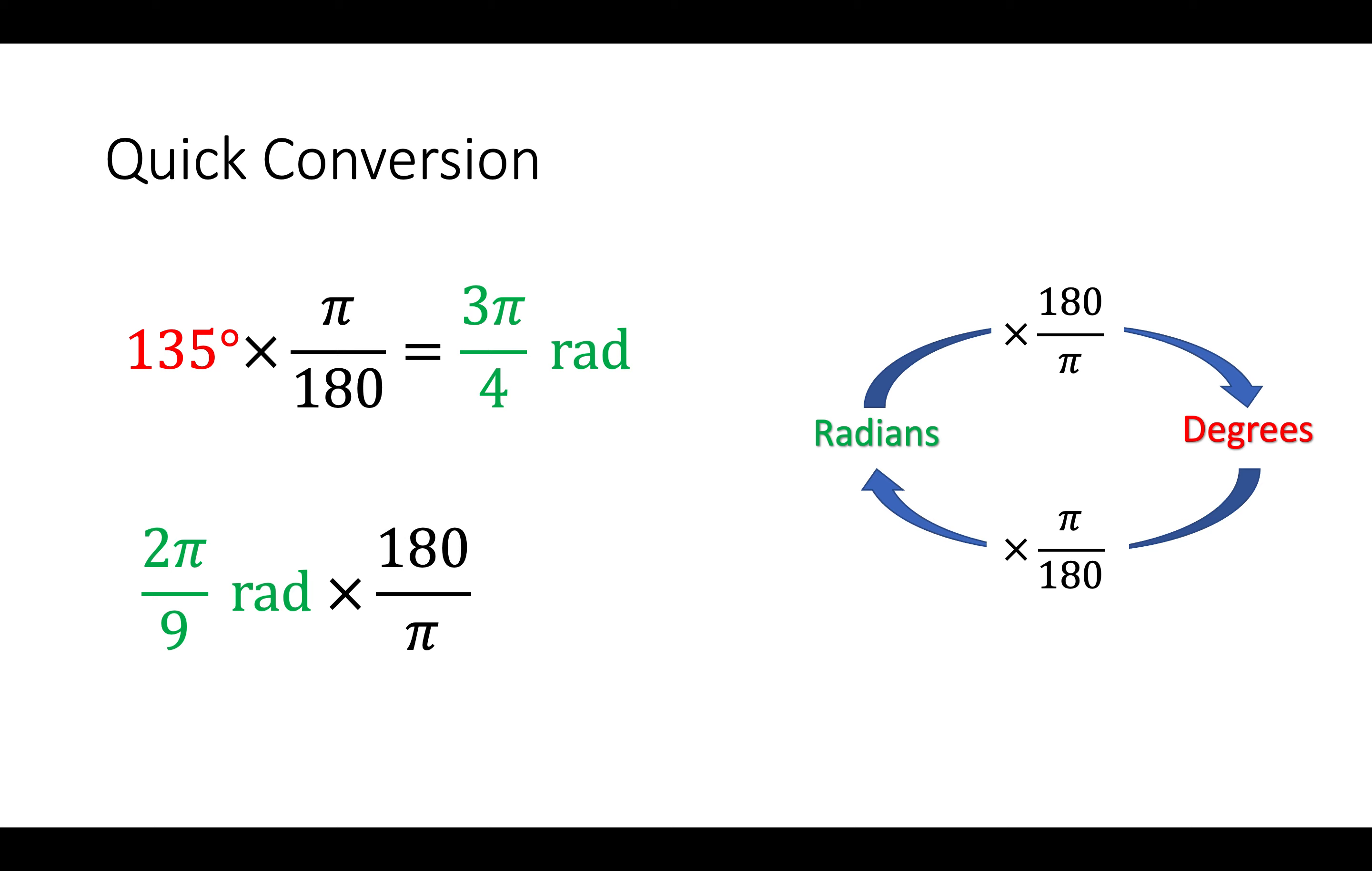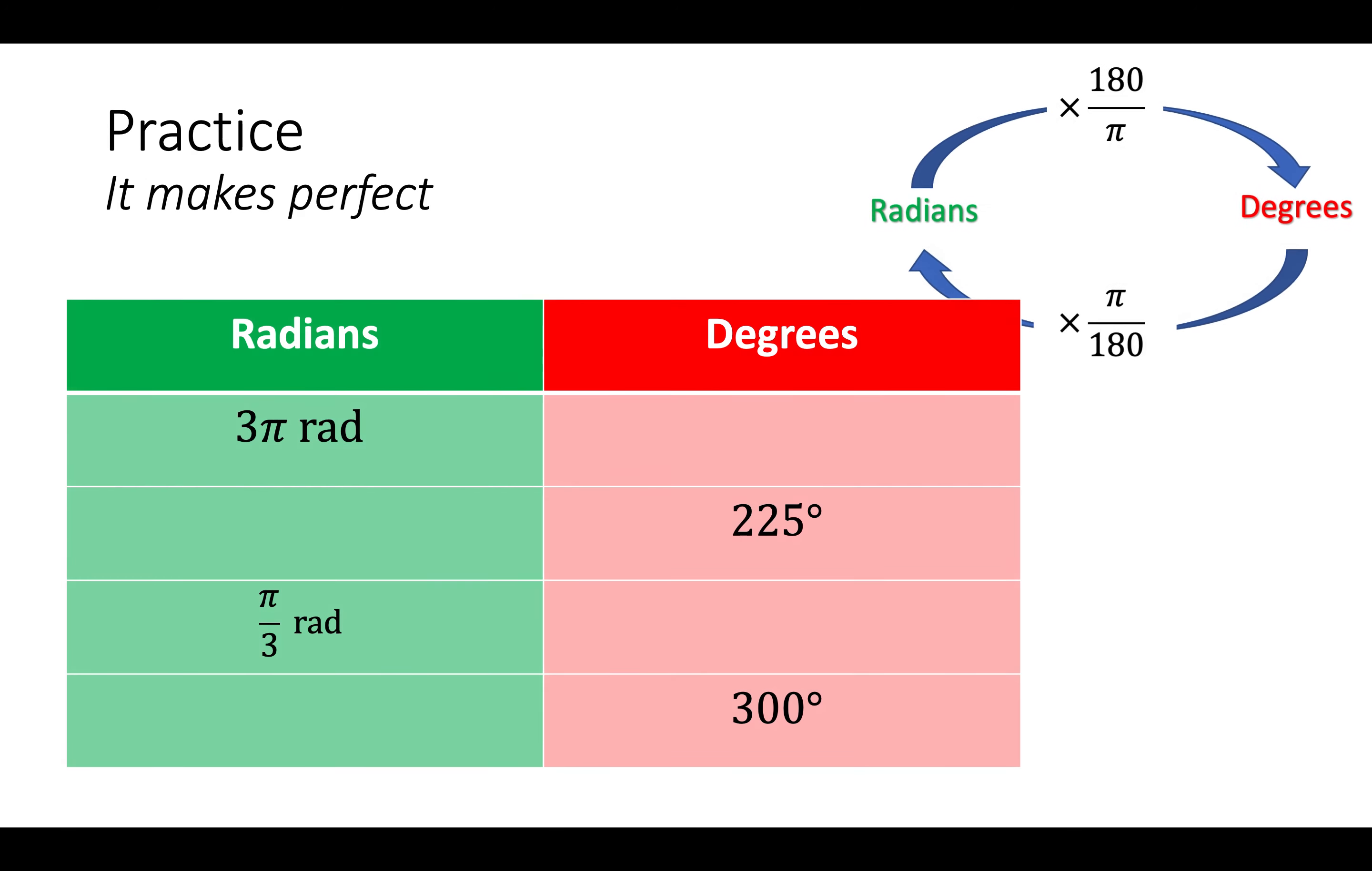Similarly, if I've got 2π over 9 radians and times by 180 over π, I will get 40 degrees. You can do this on your calculator. Just type this into your calculator as you normally would. You don't need to do this in your head. So, calculator time.